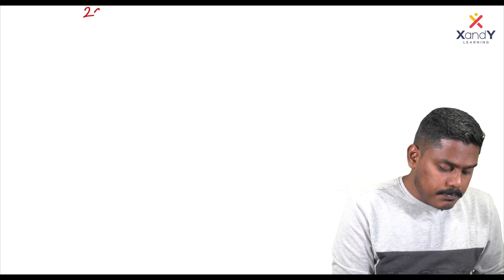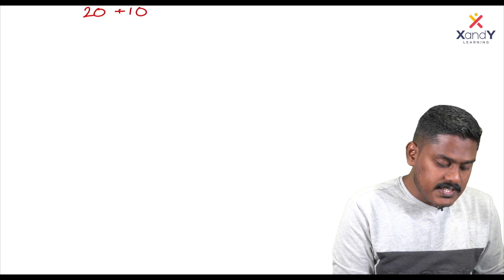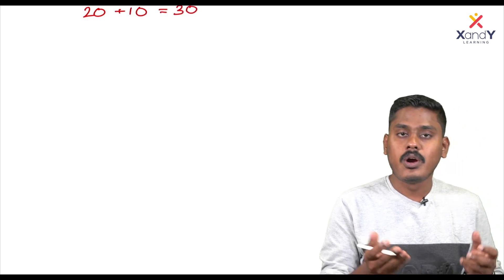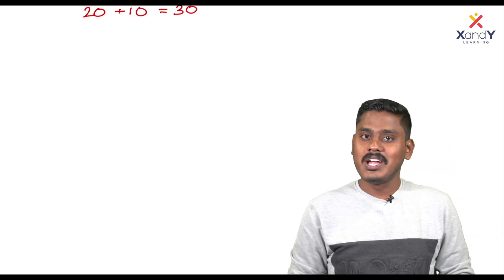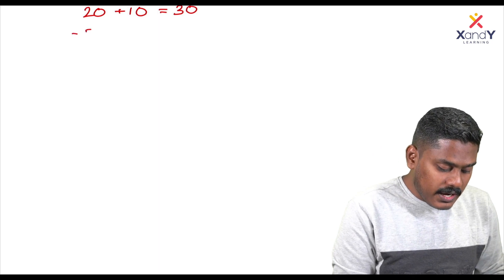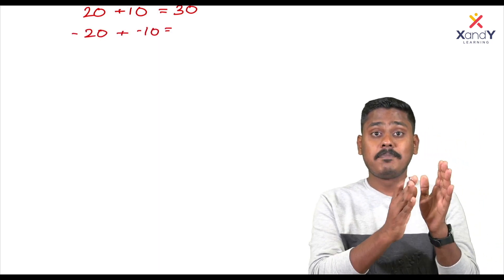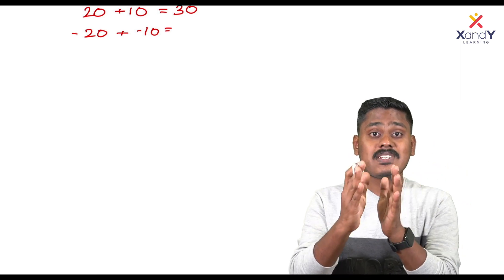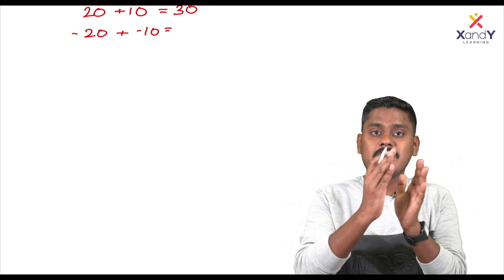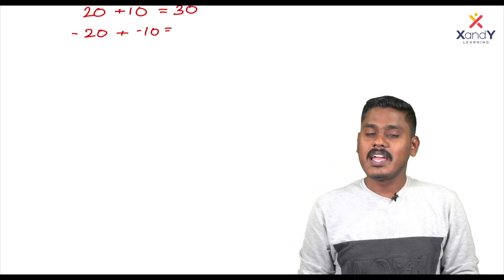Let's talk about addition. For example, 20 plus 10 is equal to 30. Now consider minus 20 plus minus 10. Just as 20 plus 10 is 30, this gives us minus 30.